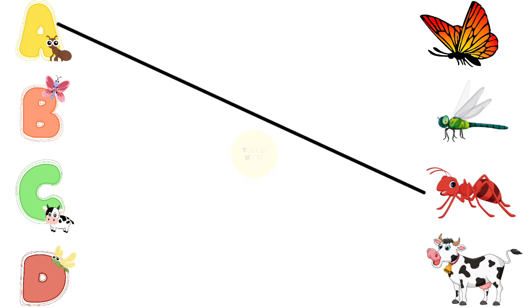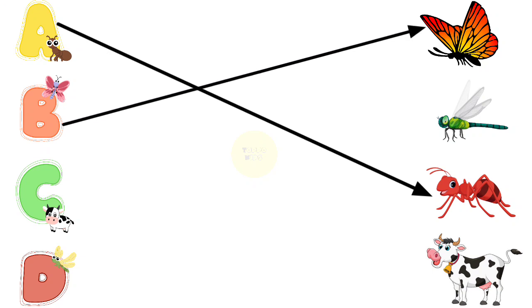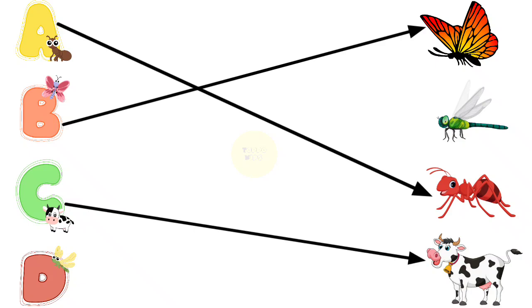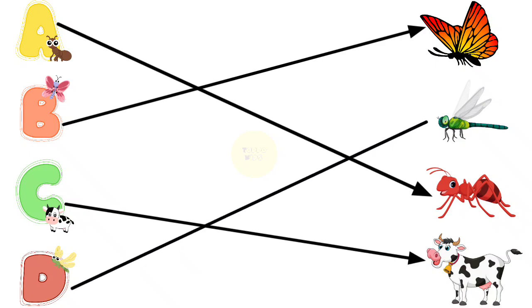A for ant, B for butterfly, C for cow, D for dragonfly.